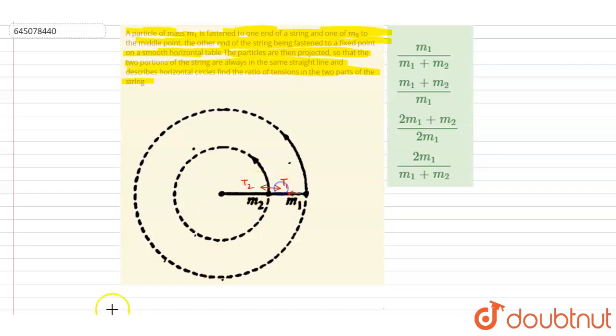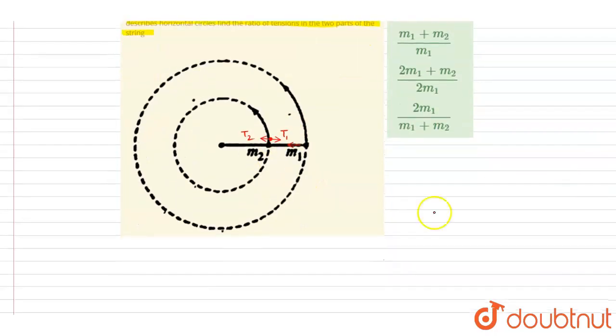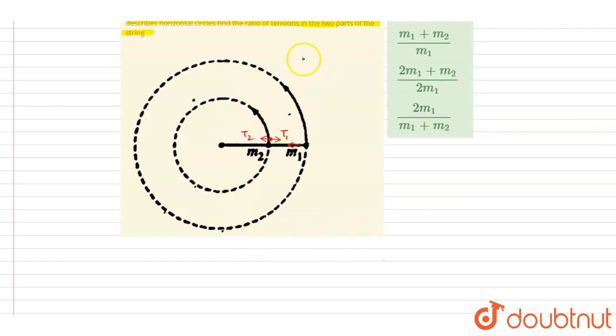And this m2 is at the middle point, so this length is l by 2, and this whole length is l. So distance of this m1 from the center is l.